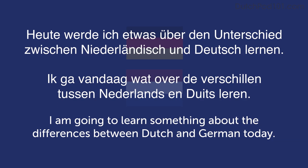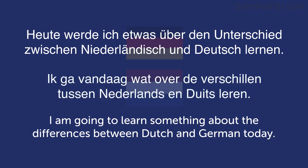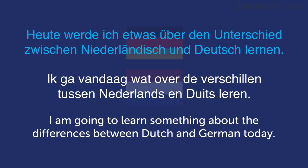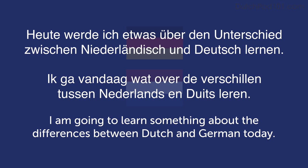Let me illustrate with an example: 'I am going to learn something about the differences between Dutch and German today.' In Dutch and German, only the conjugated verb — 'gaan' in Dutch or 'werden' in German — is at the beginning of the sentence. The infinitive — 'leren' in Dutch or 'lernen' in German — is at the end of the sentence. This is something typical of Dutch and German.